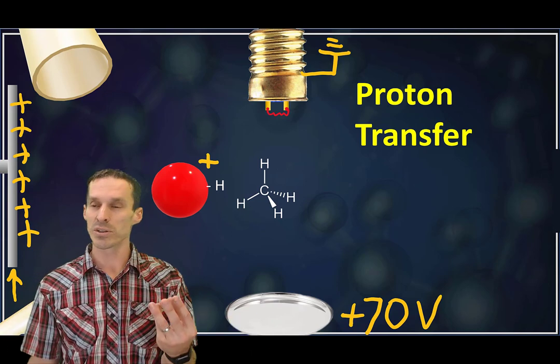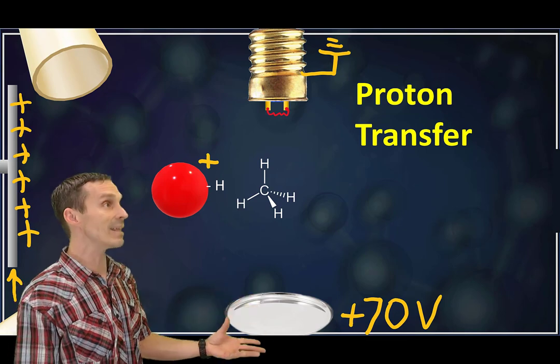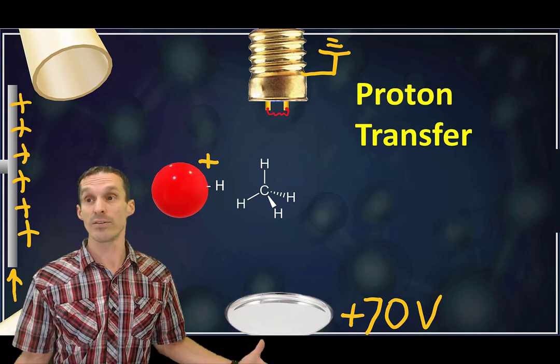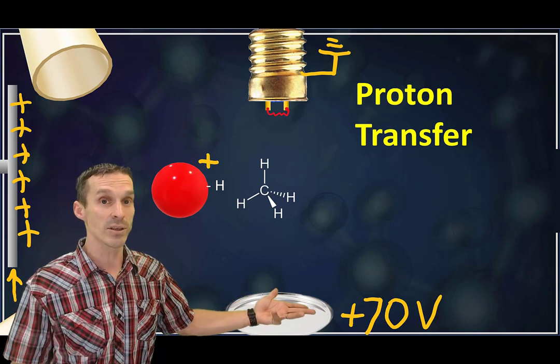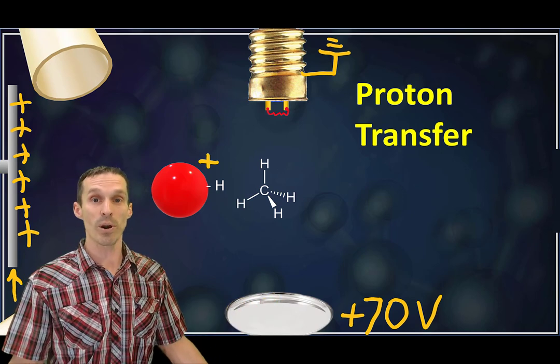One of the most important facts about EI is that our compounds begin in the gas phase. If you can't put your compound in the gas phase, good luck doing electron ionization with it, because that's where the whole process begins.